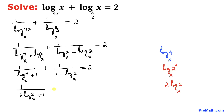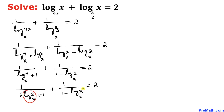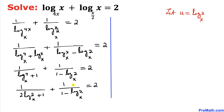To simplify, let u equal log of 2 with base x. Our equation then becomes 1 divided by (2u plus 1), plus 1 divided by (1 minus u), equals 2.